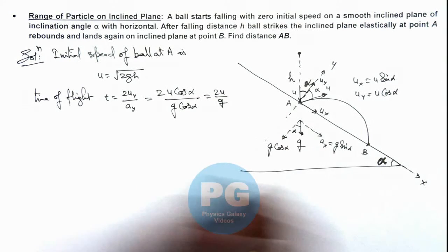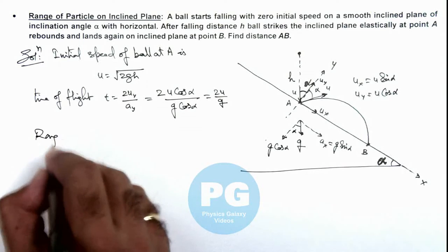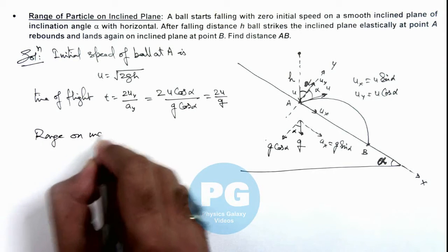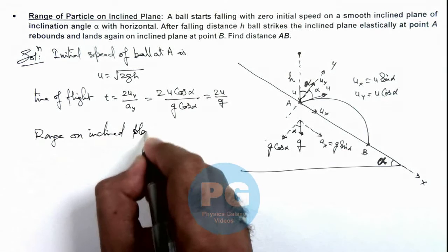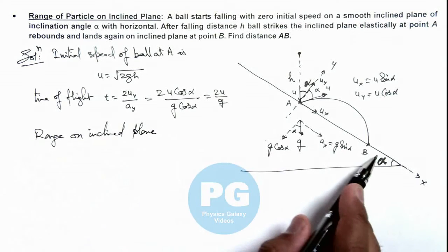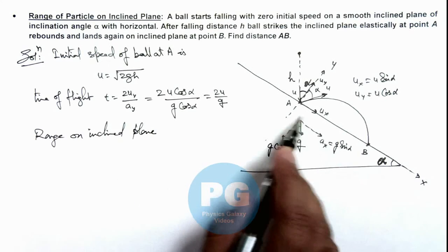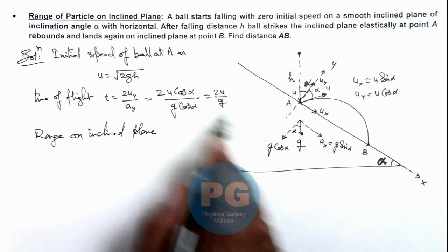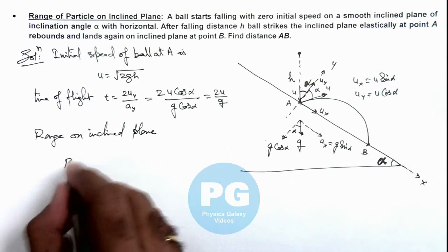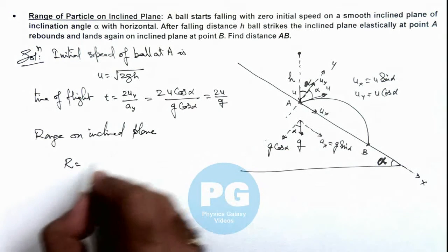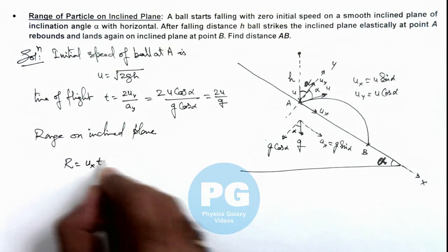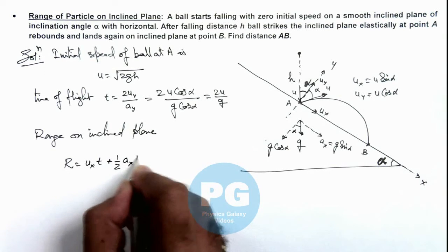If we calculate the range on the inclined plane, this range is calculated by the distance travelled by the ball along the x-axis in the time of flight. So this R we can write as initial speed u_x times t, plus half a_x t squared.